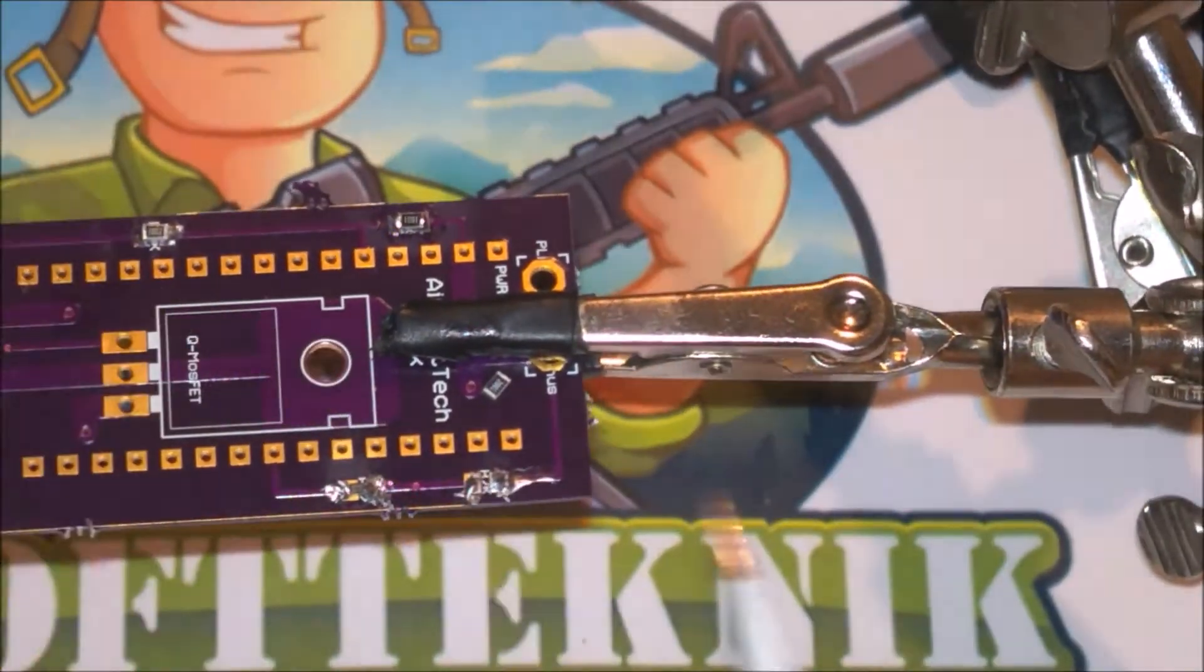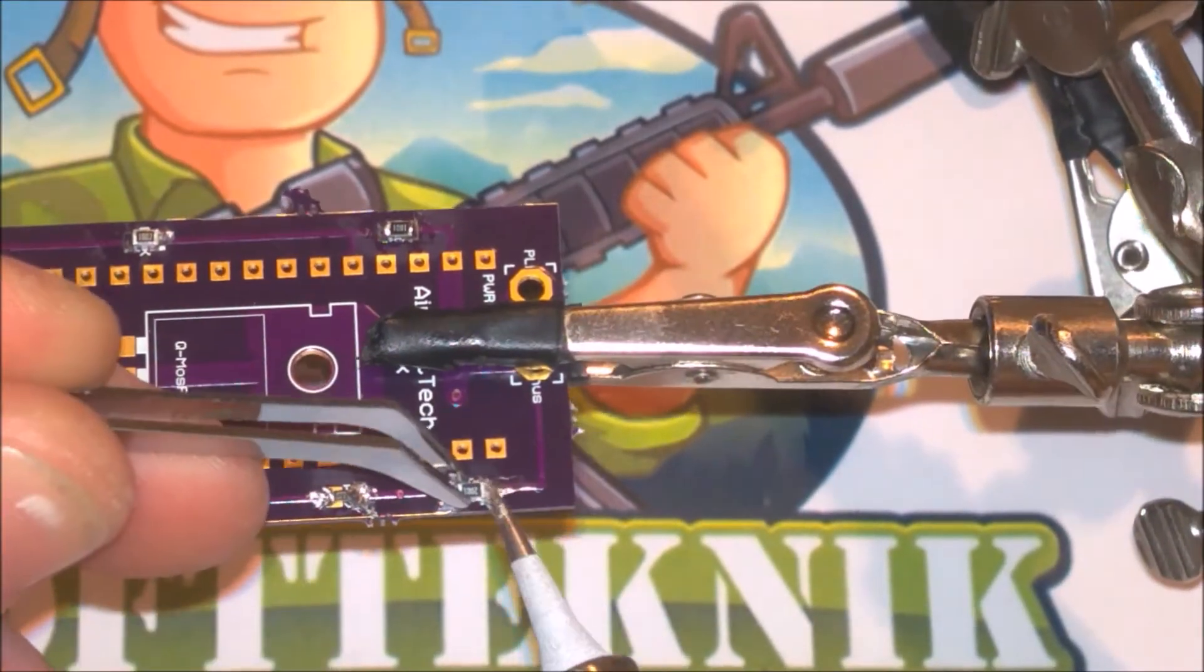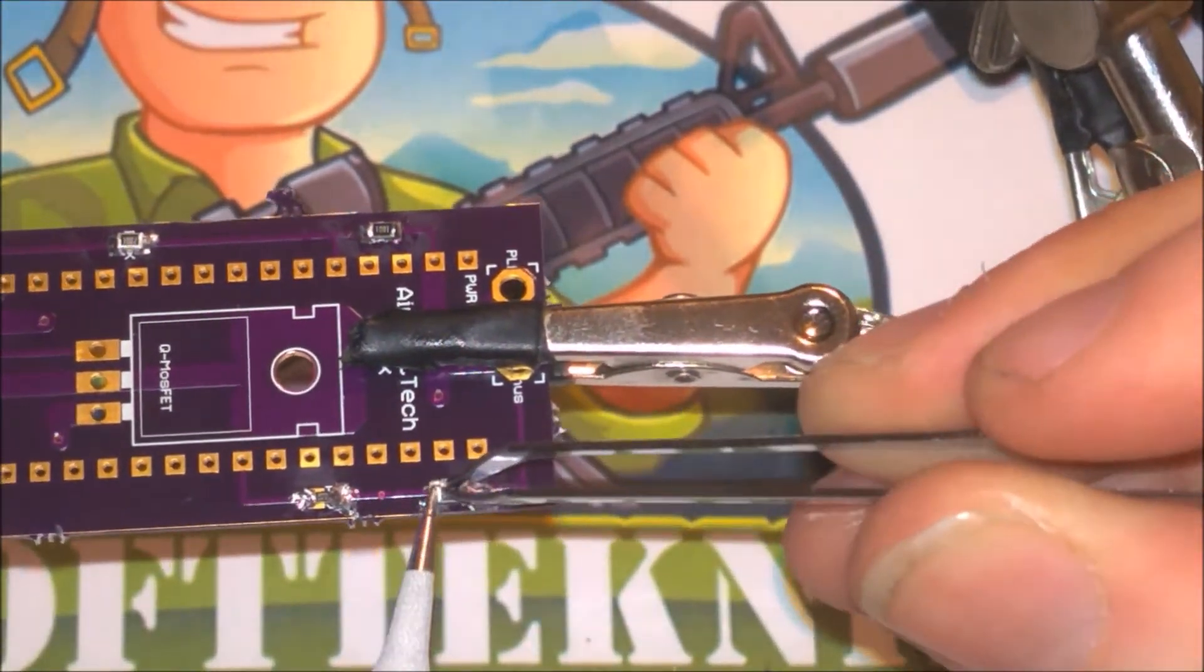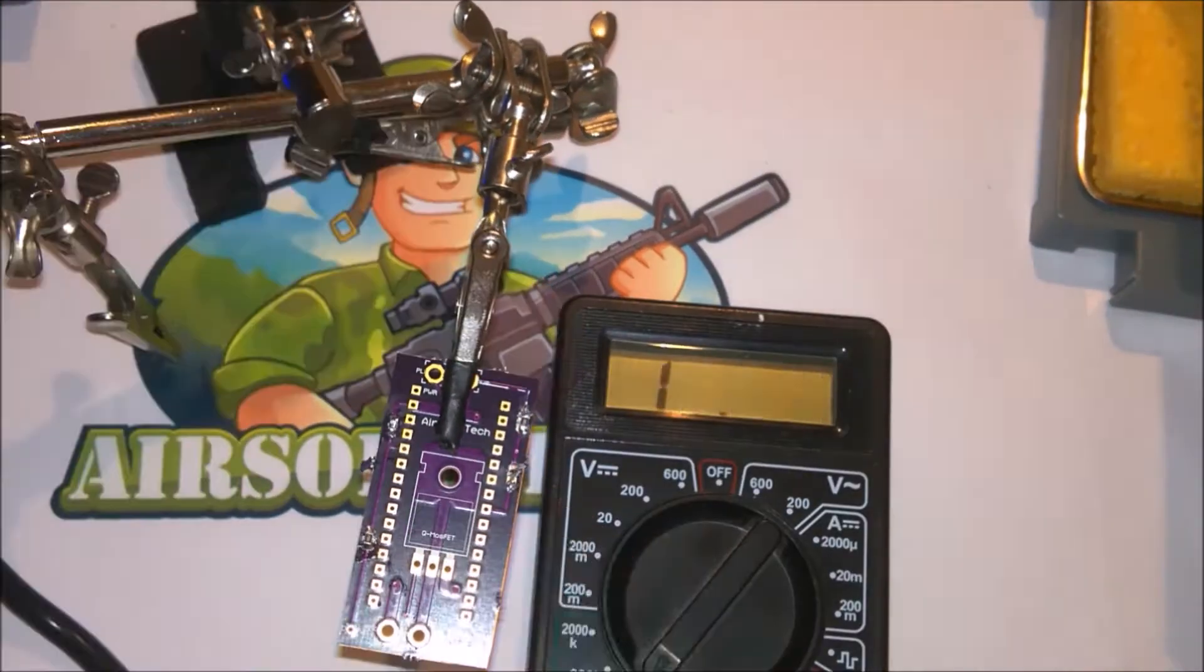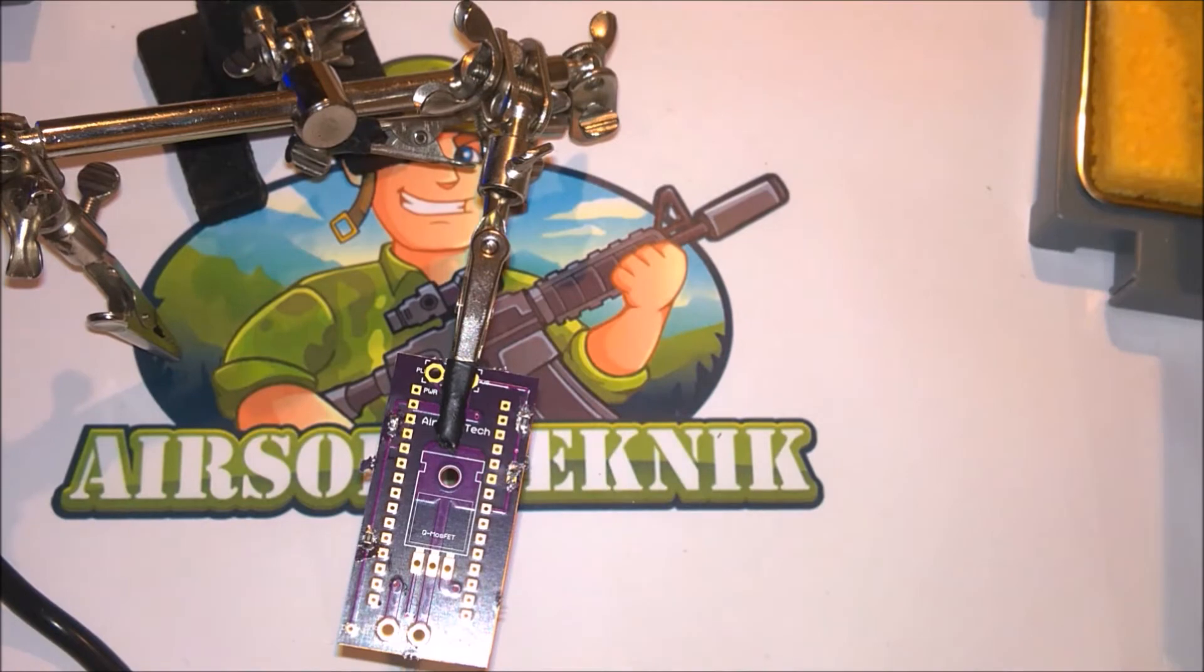Here I am soldering on a 2K resistor which is the discharge resistor. And that is the resistor responsible for discharging the MOSFET so it turns off after you are done shooting.